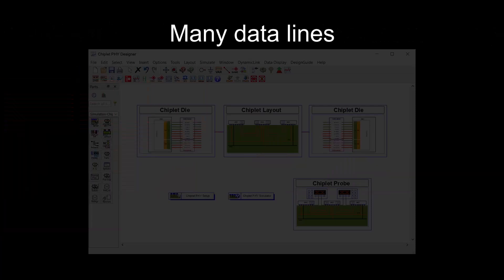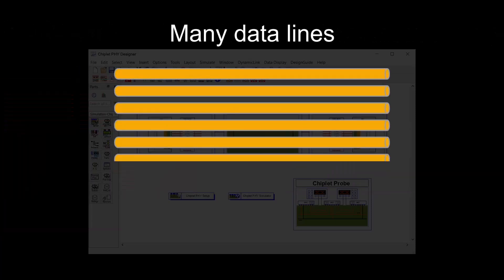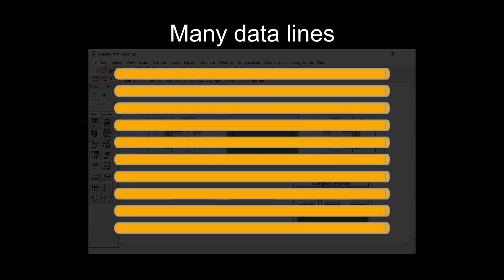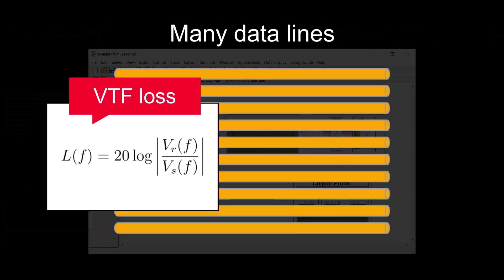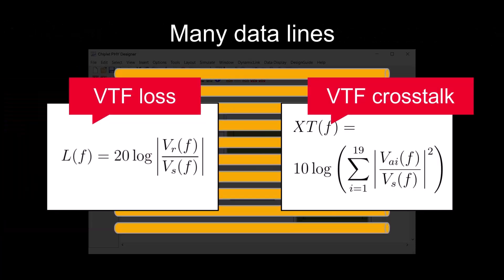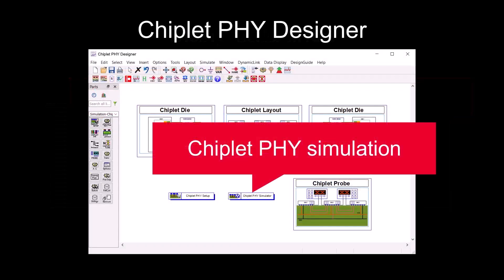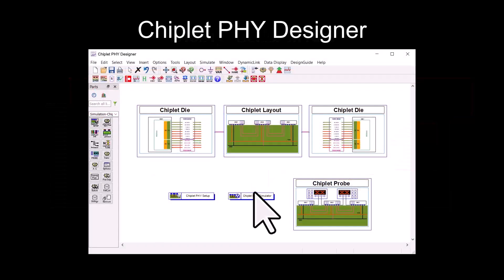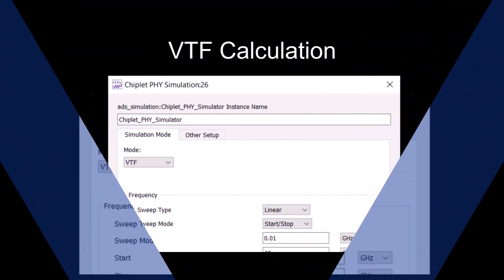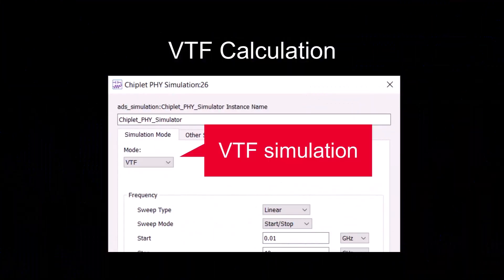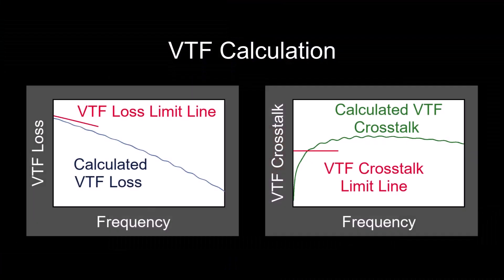If there are multiple data lines, calculating the voltage transfer function manually takes a lot of time. Chiplet Phi Designer does the calculation for VTF loss and VTF crosstalk for you to save you the trouble.